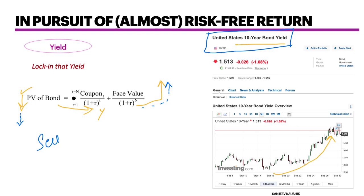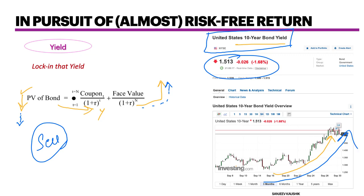It is that selling which is pushing prices down and making yields go up. So this almost risk-free return of 1.513% is not acceptable to bond owners. When they keep selling these bonds, the result is a rise in bond yield. So next time you hear that bond yield is rising, what it really means is that people are selling bonds in the market.